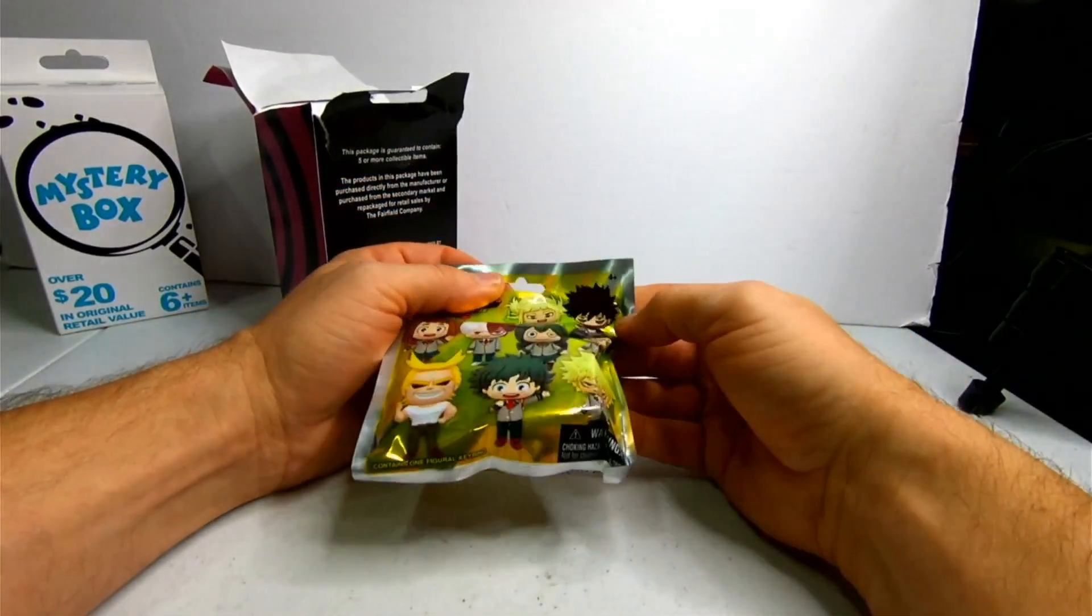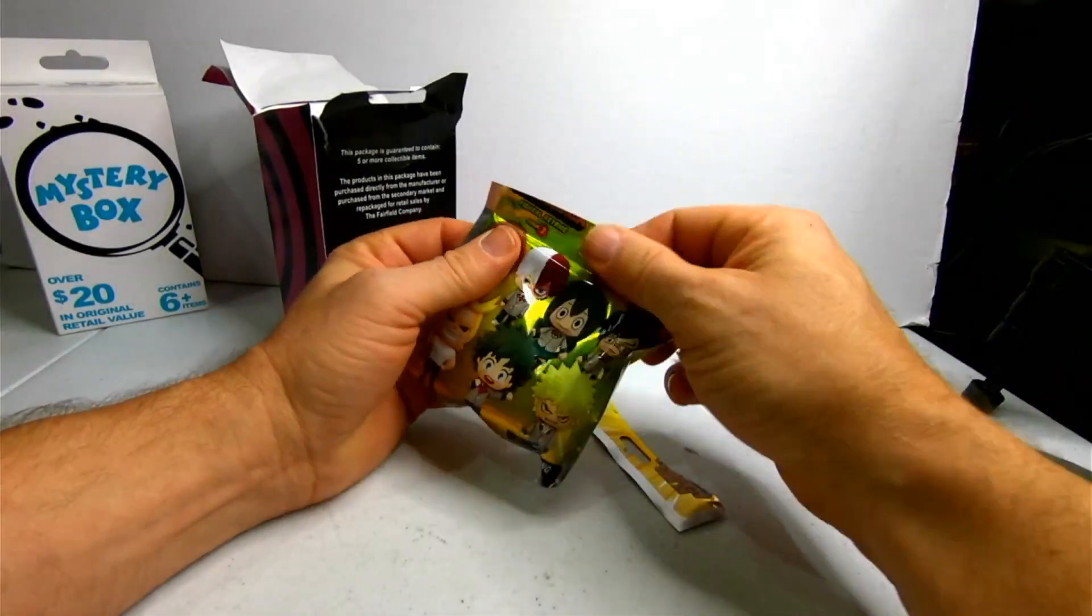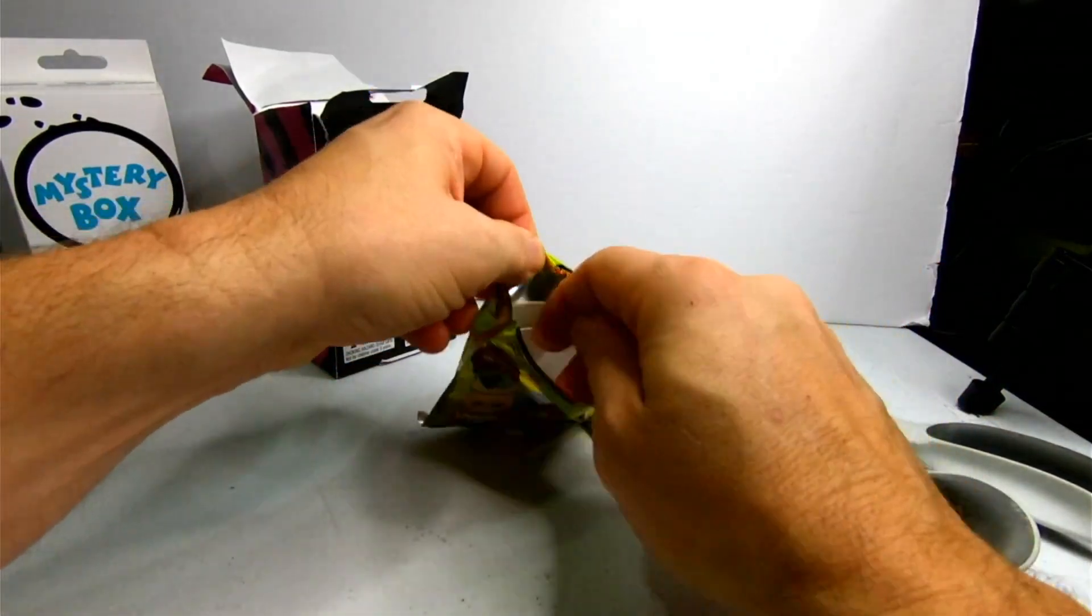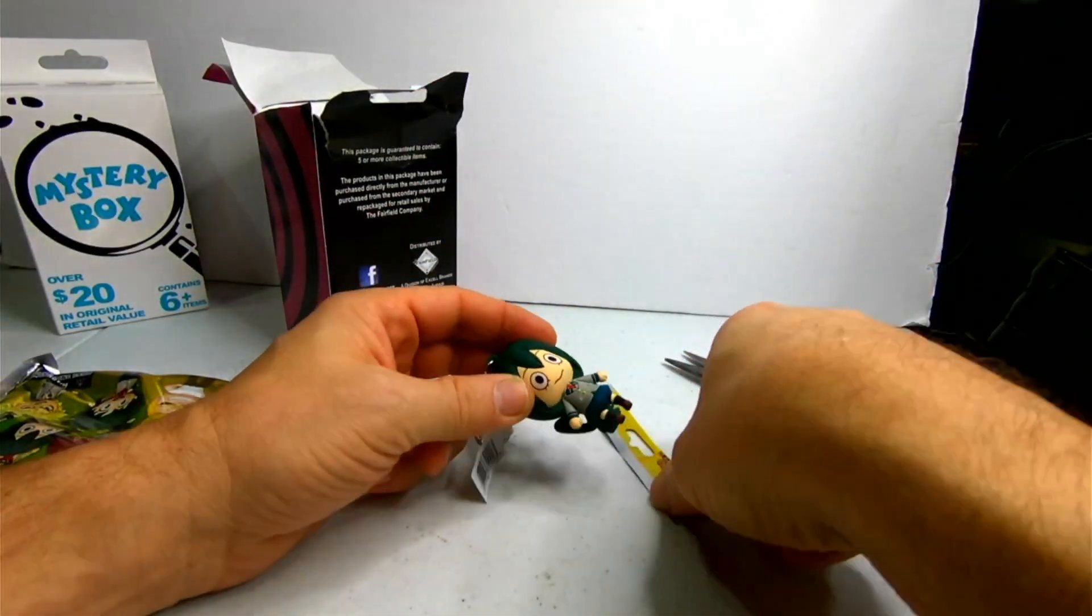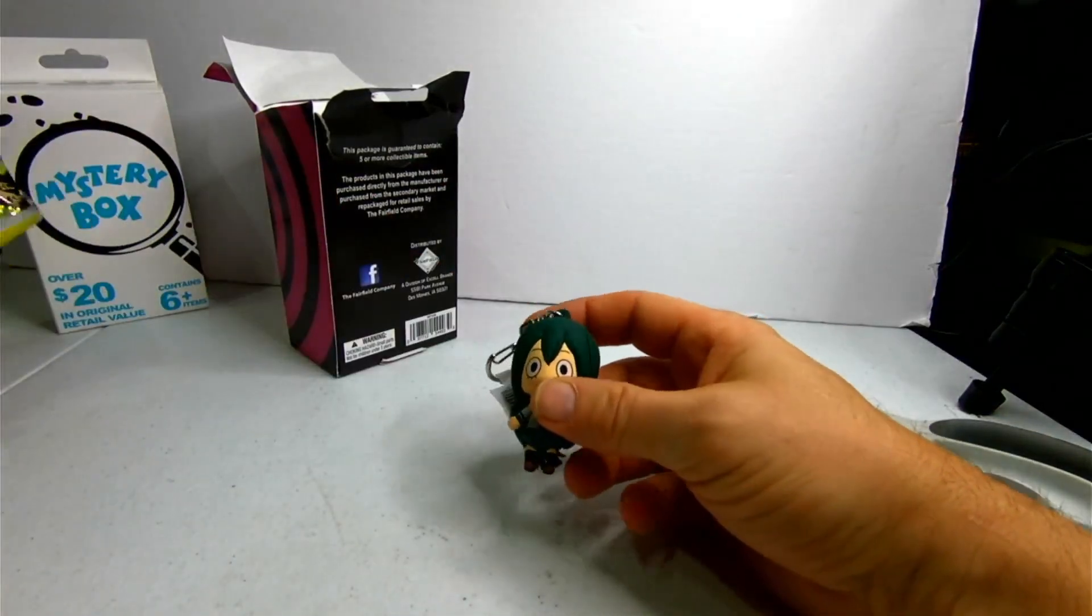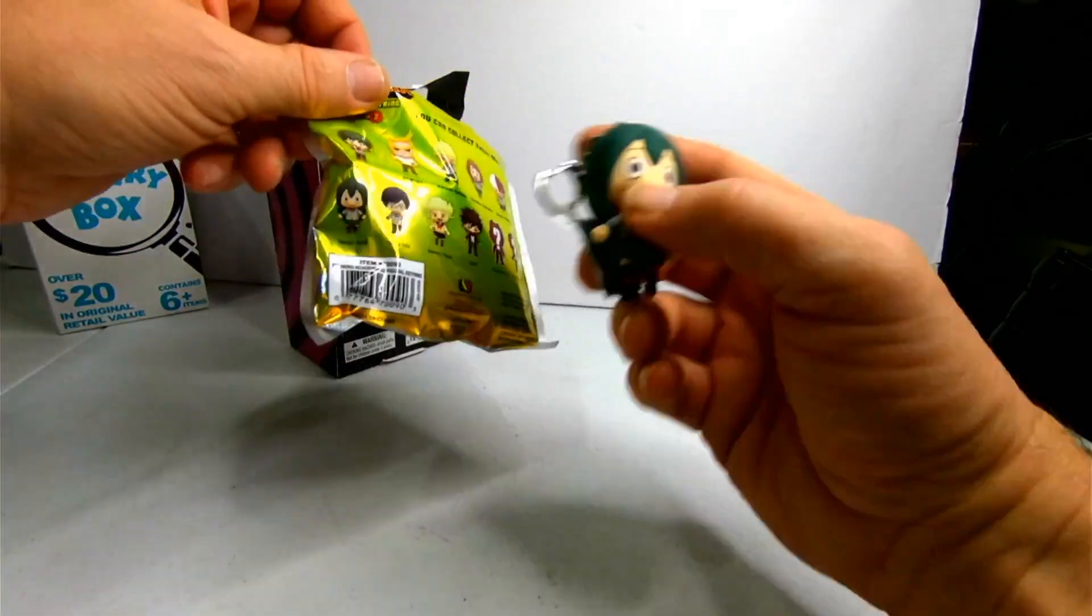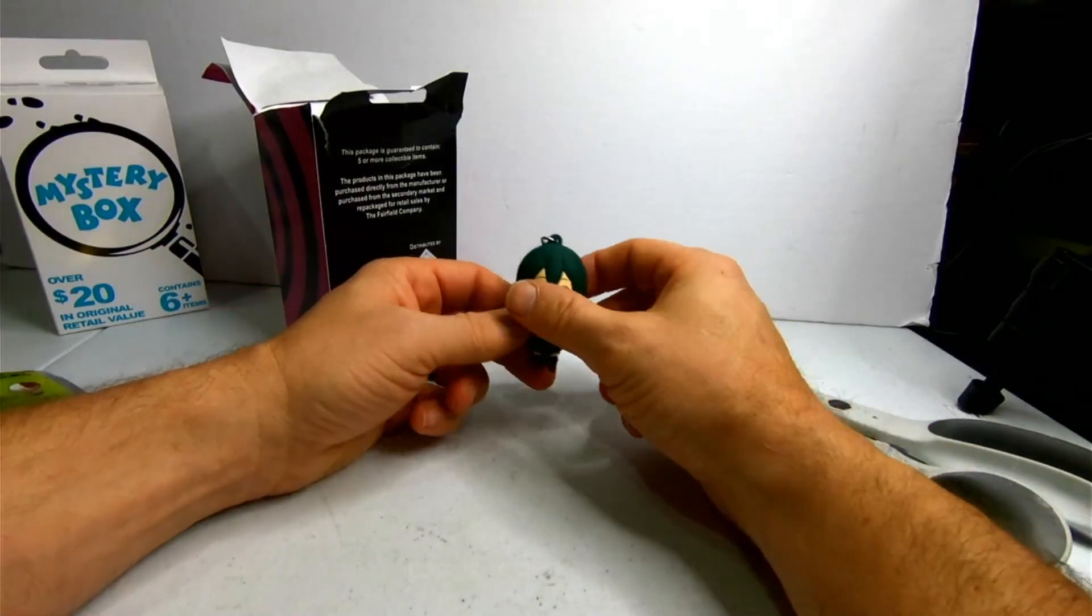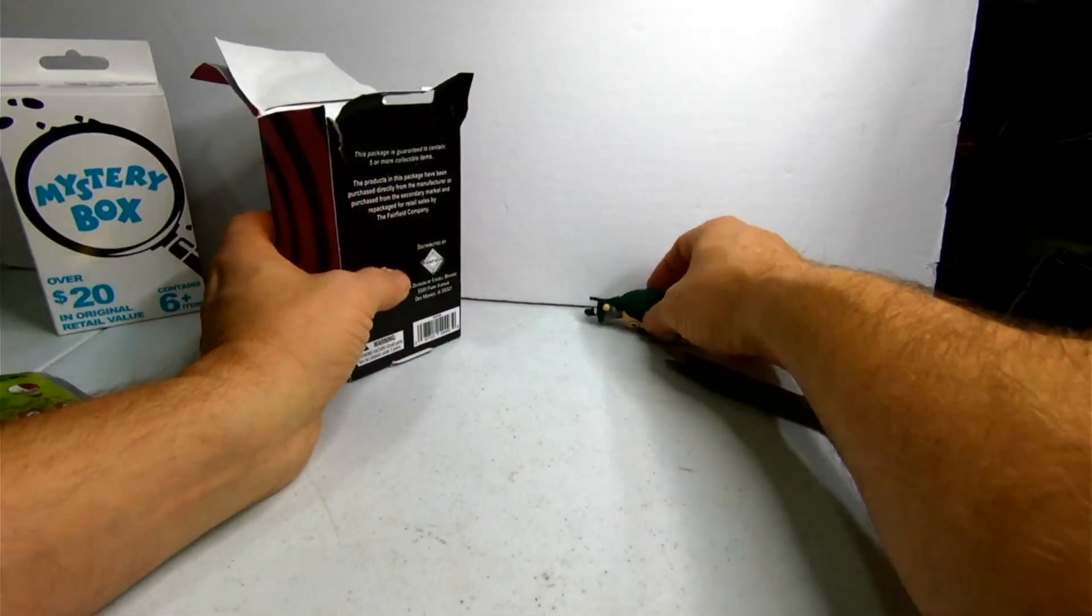We're going to skip to the chase here. And they don't even want you to feel what it is, so they put a piece of cardboard around it. And we got this girl. I don't know who she is. I'm not familiar with My Hero Academia. I have sold some of this kind of stuff before on eBay. This one looks to be Tsuyu Asui. That girl right there. I don't think that keychain is worth very much. And she doesn't stand up.